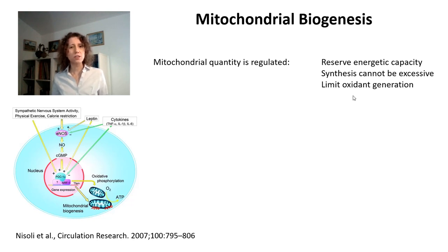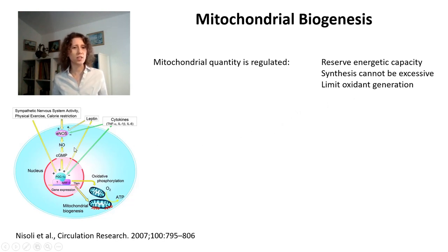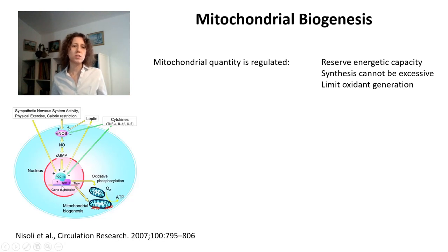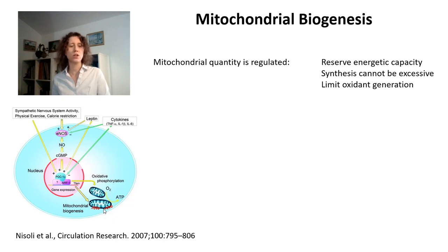This regulated process involves a very well-studied signaling pathway that involves nitric oxide and PGC1-alpha, which is a transcriptional coactivator. These are going to regulate both the production of proteins encoded by genes in the nucleus and the production of the few proteins that are encoded by mitochondrial DNA.